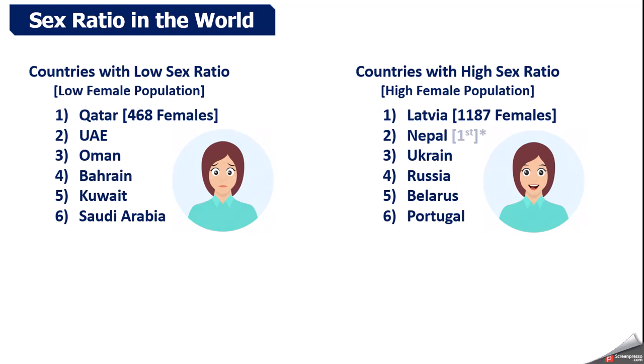In the NCERT book, Latvia is given as the topmost country with the highest female sex ratio. However, I have explored on Google and found that at present it is Nepal where female sex ratio is the highest. But for examinations, remember only Latvia. If the question comes about the highest sex ratio, write Latvia. If about the lowest, write Qatar.